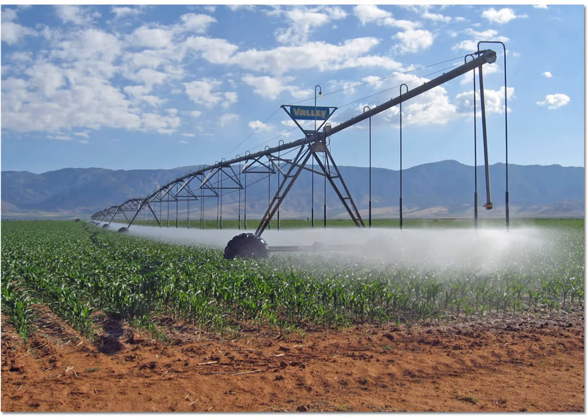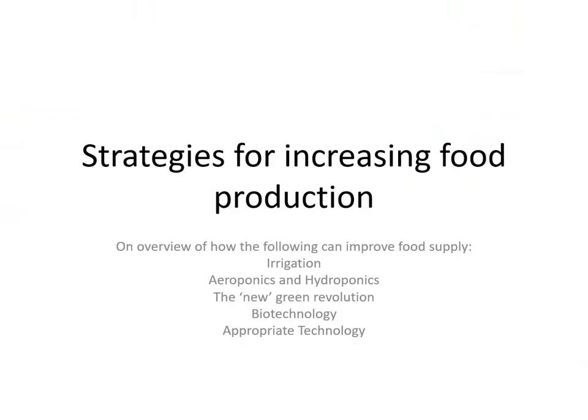We're looking at food supply and how we can increase it. We're looking at strategies for increasing food production, and you need to have an overview of how the following things can improve food supply. We'll be looking at irrigation, aeroponics and hydroponics, something called the new green revolution, and the use of biotechnology and appropriate technology. That's what we're learning about today. I suggest you write that title down in your book.